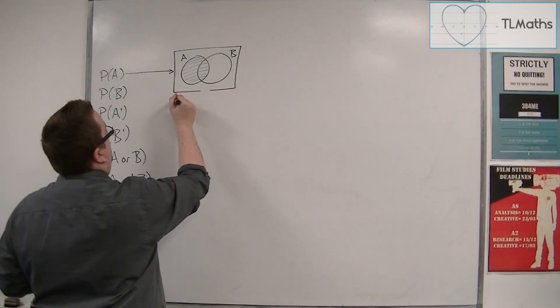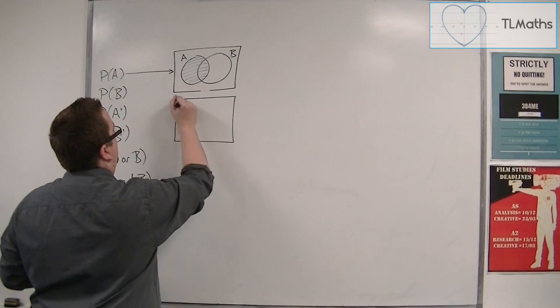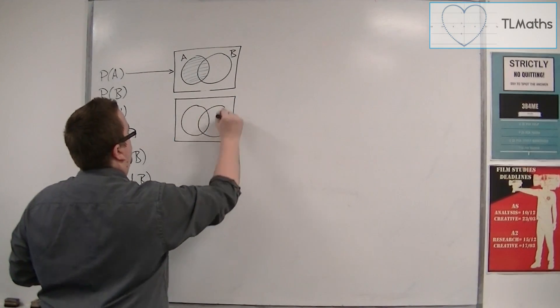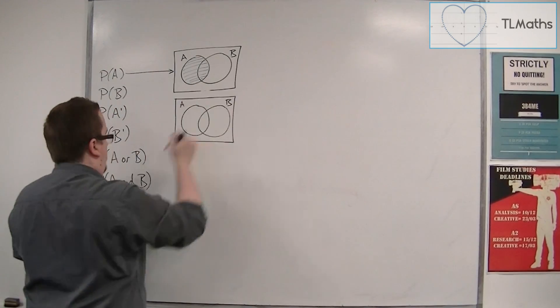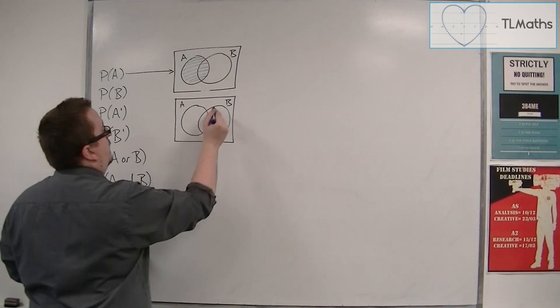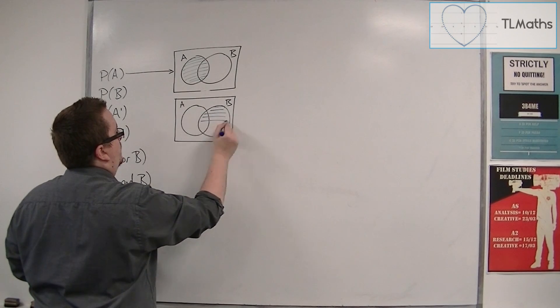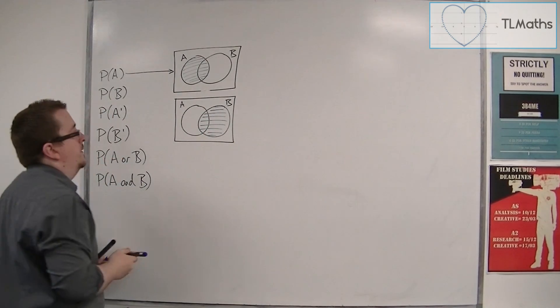If we're looking at the probability of B, then in a similar way, probability of B would be this section here.